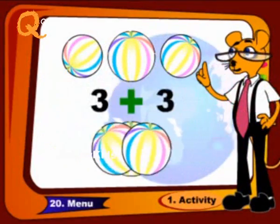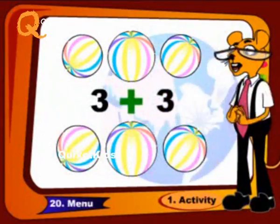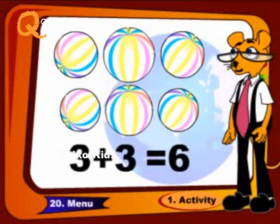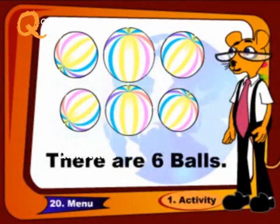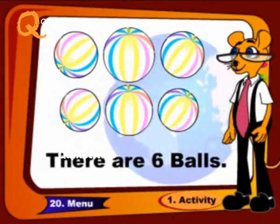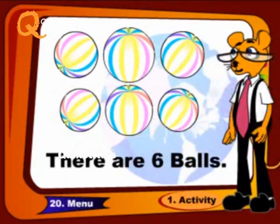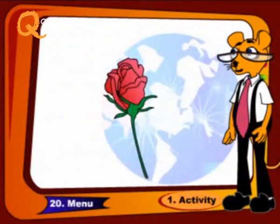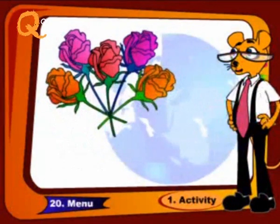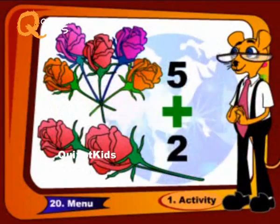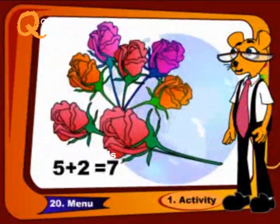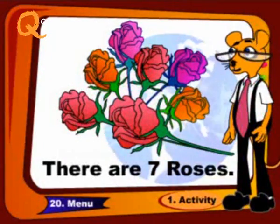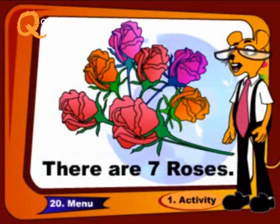Three balls plus three balls. There are six balls. Five roses plus two roses. There are seven roses.